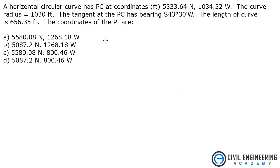Problem states a horizontal circular curve has PC at coordinates 5333.64 north and 1034.32 west. The curve radius is 1030 feet. The tangent at the PC has bearing of south 43 degrees 30 minutes west. The length of the curve is 656.35 and it's asking what the coordinates of the PI are.